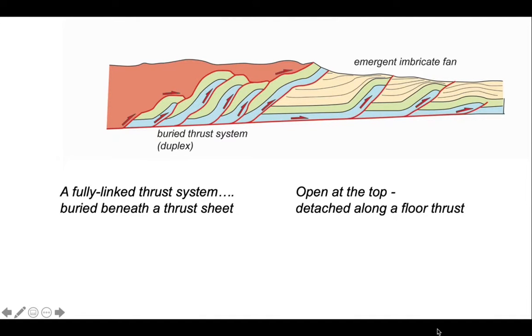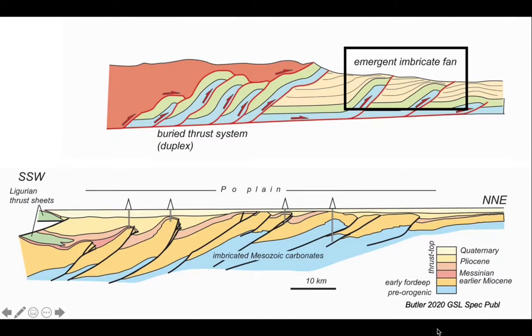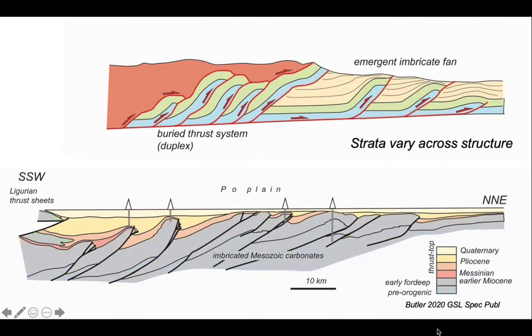But the more outlying structures can interact directly with the Earth's surface, and these are therefore called emergent imbricate fans. A classic example of this comes from the Northern Apennines beneath the Po Plain in Northern Italy. Let's just grey out some of the pre-thrusting strata. And we can see that the strata we've left colored up in here show thickness variations between the thrust sheets, indicating that they were deposited and are controlled by the evolving structure.